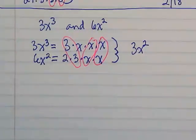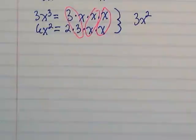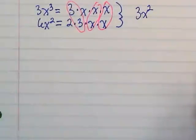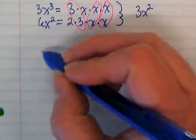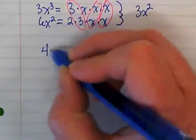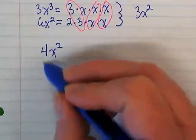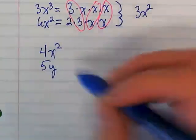Thumbs up if that makes sense. Okay. I'm going to do one more, and then I'm going to give you time to do a little practice on this. We're doing 4x squared and 5y to the third.